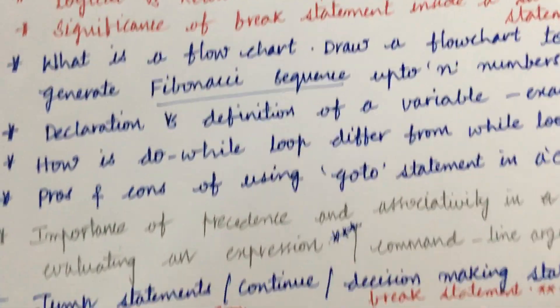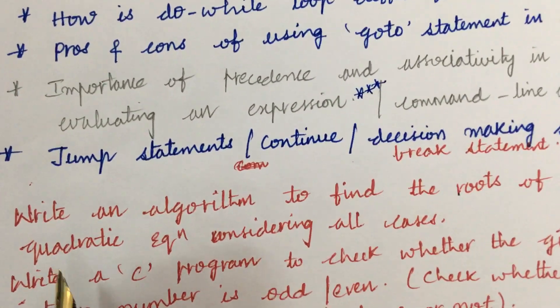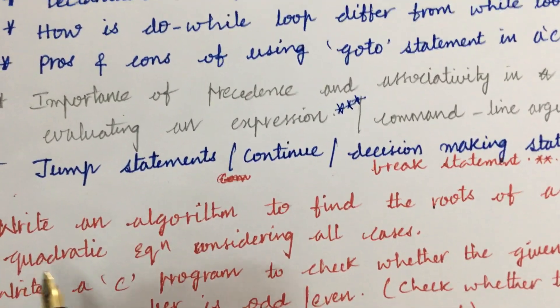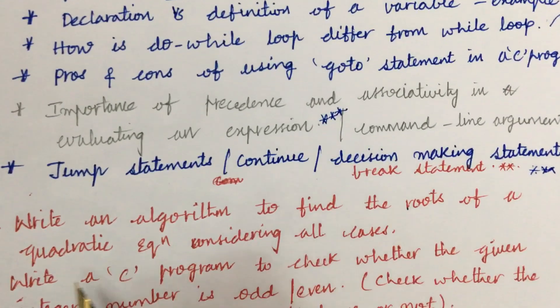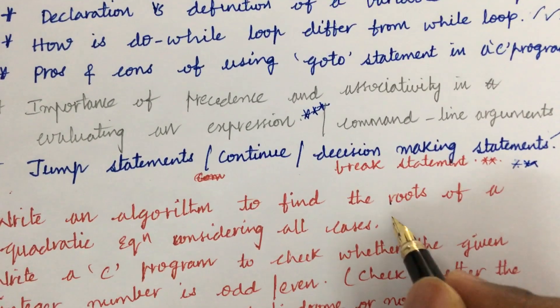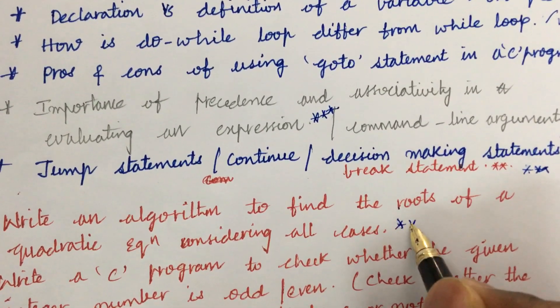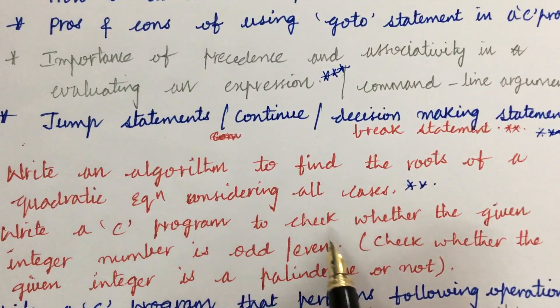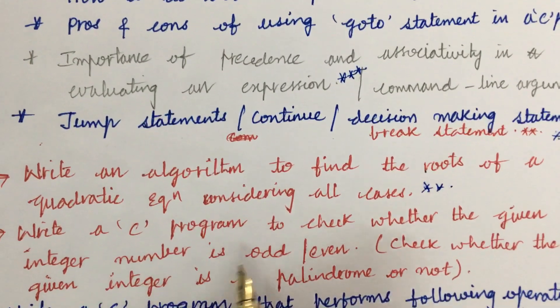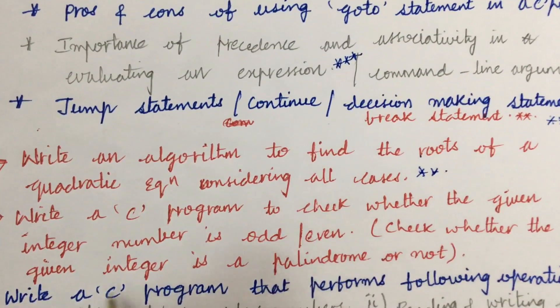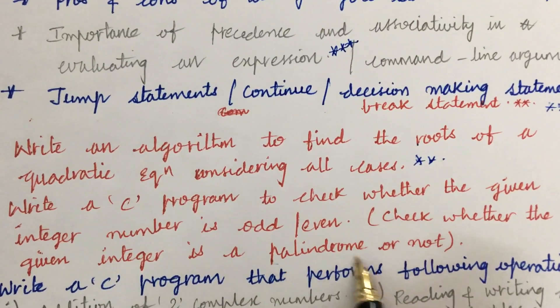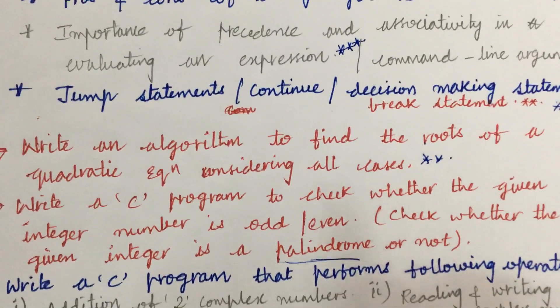From this I am going to let you know a few programs also related to Unit 1. Write an algorithm to find the roots of a quadratic equation considering all cases - said to be a very important gunshot question. Write a C program to check whether the given integer number is odd or even and check whether the given integer is a palindrome or not - also very important and repeatedly asked.